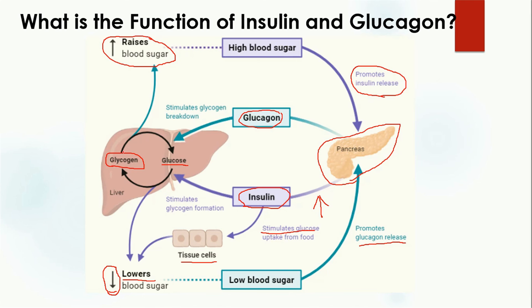Glucagon works in the opposite direction to insulin — it converts or breaks down glycogen into glucose to increase the blood sugar level. That was all about the function of insulin and glucagon. I'll see you in the next video.